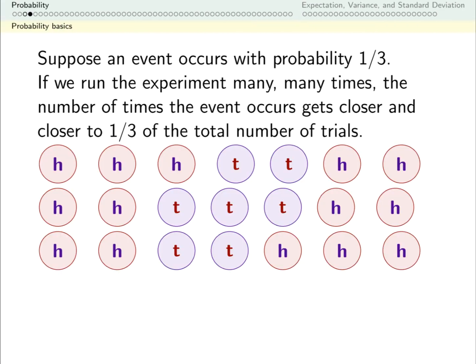So for example, let's say I flip an unfair coin, and the probability of turning up tails is 1/3. Well, it's not the case that I'm going to go tails, heads, heads, tails, heads, heads.